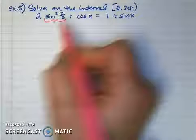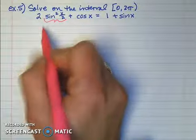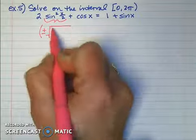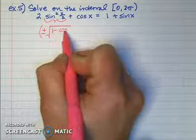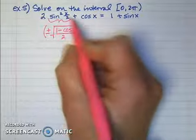When I evaluate sin(x/2), that is ±√[(1 - cos x)/2]. That's the half-angle identity.